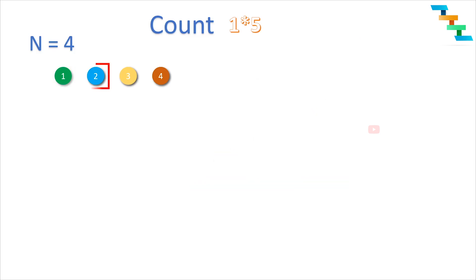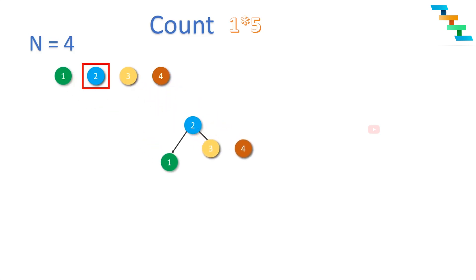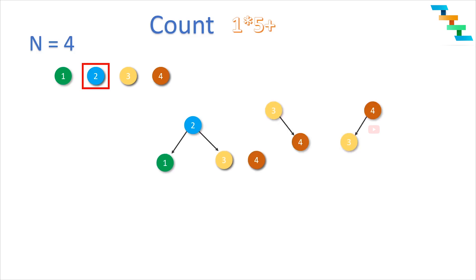Now we will make 2 as the root node and see how many unique binary search trees we can form. With 2 as root, nodes 3 and 4 go to the right subtree, and node 1 forms the left subtree. For node 1 on the left we have only one unique subtree, and for nodes 3 and 4 on the right we can form two unique subtrees — one with 3 as root and one with 4 as root.